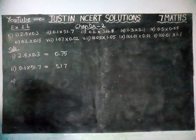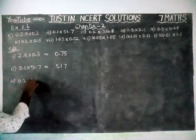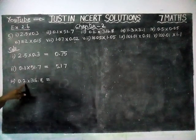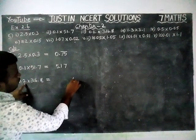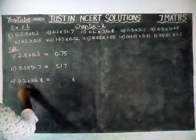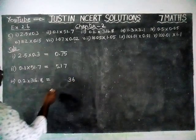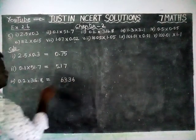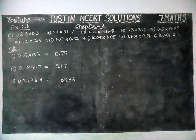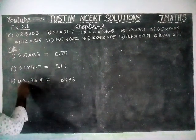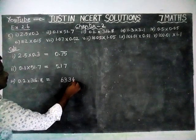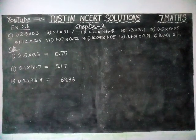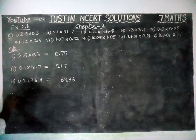Third question: 0.2 into 316.8 is equal to. We have to multiply with the number 2. 8 twos are 16, remaining 1. 2 sixes are 12, 12 plus 1 is equal to 13, remaining 1. 2 ones are 2, 2 plus 1 is equal to 3. 3 twos are 6. So 6336 is coming. Now we have 2 decimal digits, so from the right hand side we move 2 digits to the left. So 63.36 is the answer for the third question.